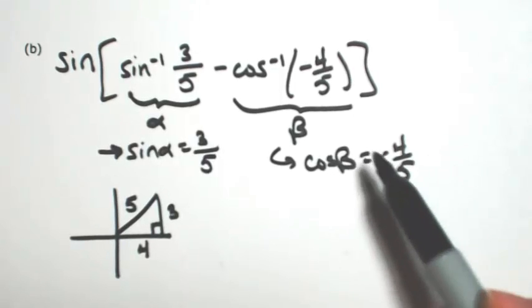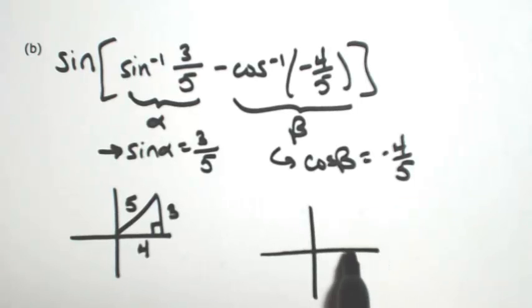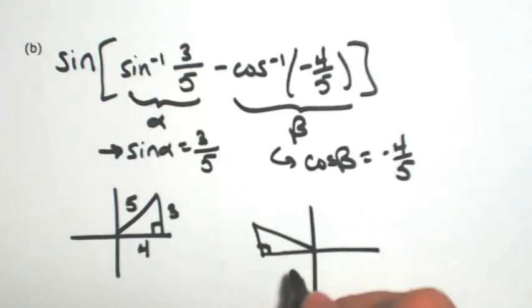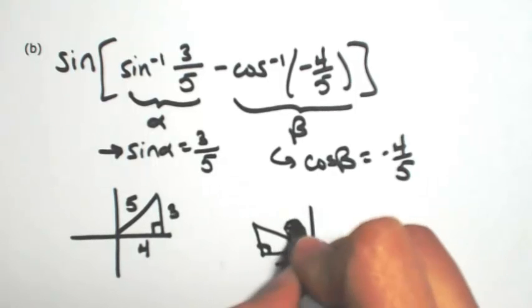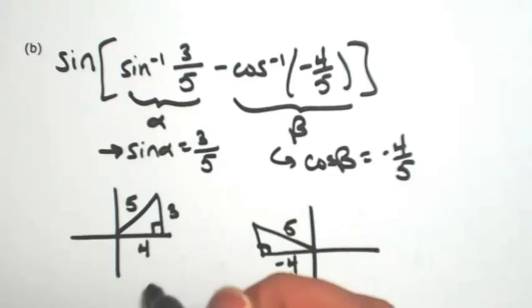For cosine, inverse cosine outputs can only be in the first and second quadrant only. So since this is negative, it must be in the second quadrant. It cannot be anywhere else. I'm going to draw that triangle where the adjacent is negative 4, hypotenuse is 5. I'm sure you can guess the opposite is going to be 3.